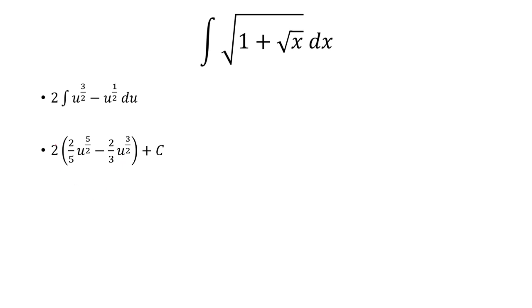Next, I'm going to distribute the 2 to both of those. We'll get 4 fifths and 4 thirds as coefficients. Now we have to go back in terms of x.